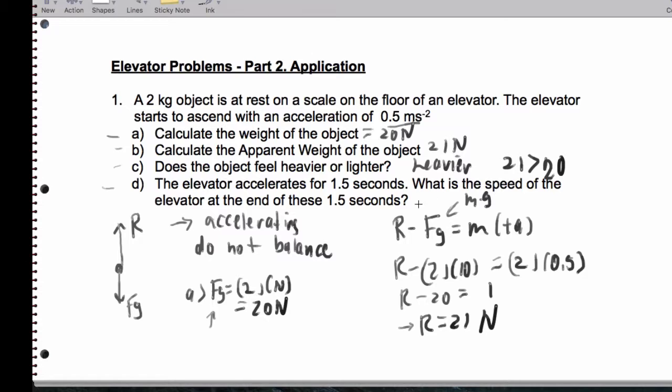Finally, the elevator accelerates for 1.5 seconds. We want the speed. So, for part D, we're going to use V is AT plus U. V is the unknown. A is 0.5. The time it travels for is 1.5 seconds and U is 0. So we end up getting a speed at that 1.5 second mark of 0.75 meters per second.